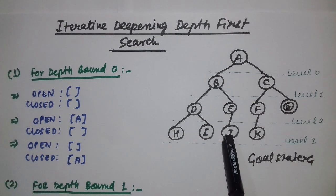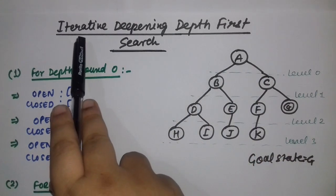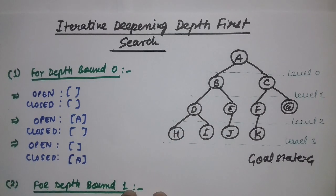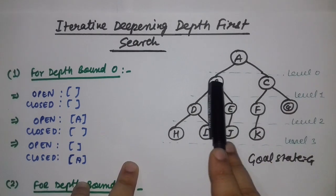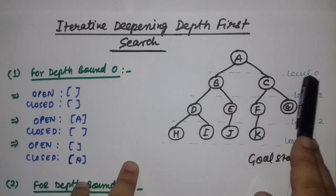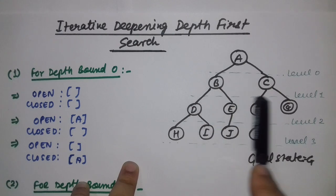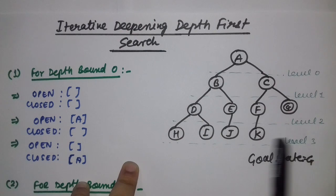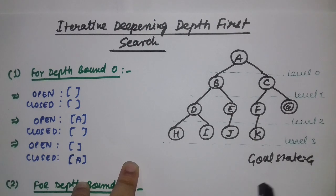As we are going for the iterative deepening, and as I discussed in depth limited search, we will mark the labels. This is label 0 — A is lying in label 0. B and C are in label 1. The four elements D, E, F, G are in label 2, and H, I, J, K are in label 3. So there are four labels, and the goal state is G.